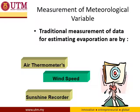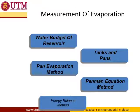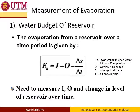There are various measurements of meteorological variables related to evaporation. Traditional measurements for estimating evaporation include air thermometer, wind speed, and sunshine recorder. Methods to measure evaporation include using the water budget of a reservoir, tanks and pans, pan evaporation, the Penman equation method, and the energy balance method. Using the water balance from Chapter 1, we can also estimate evaporation if we know inflow, outflow (from river discharge or seepage), and the change of storage from observation.